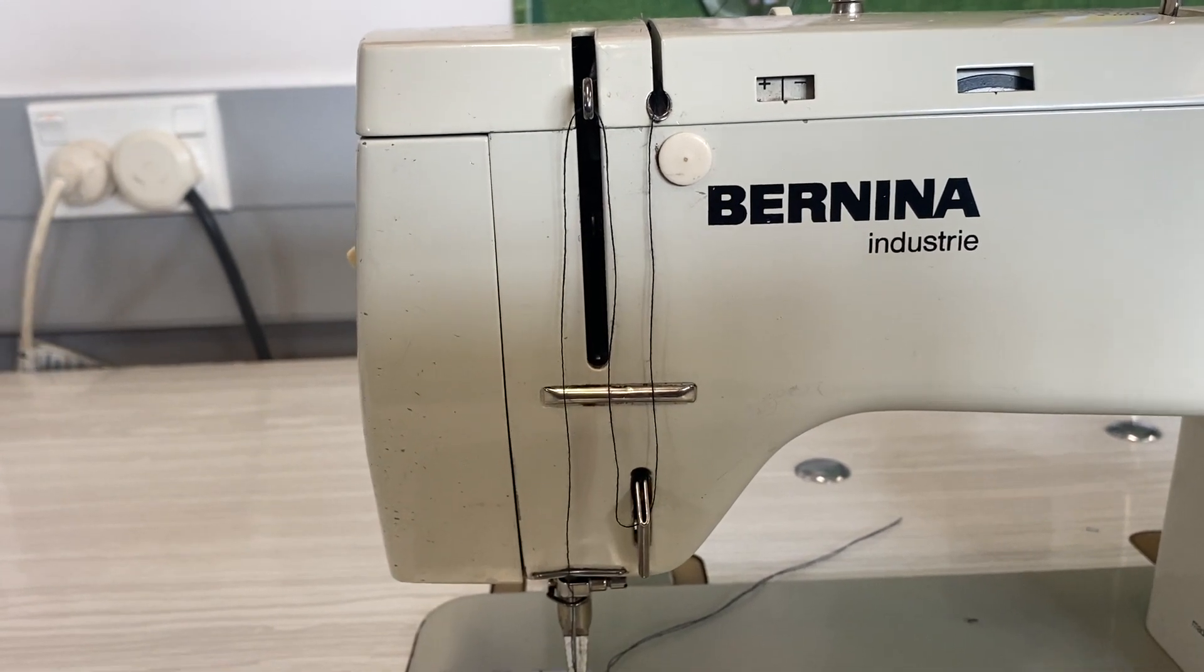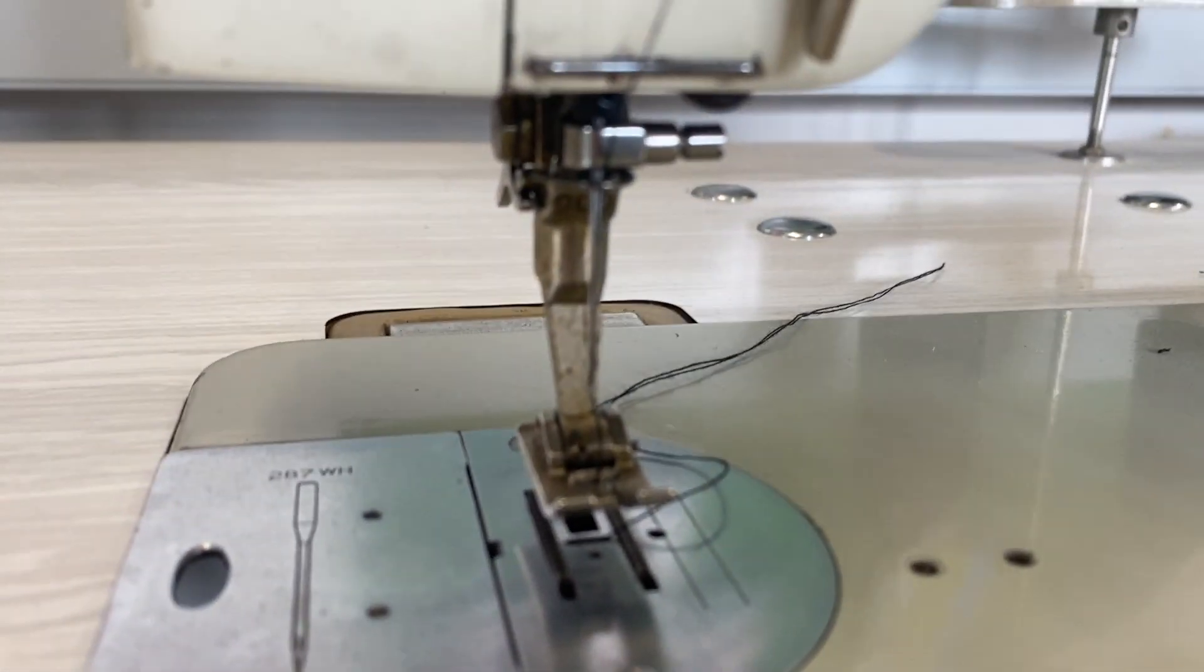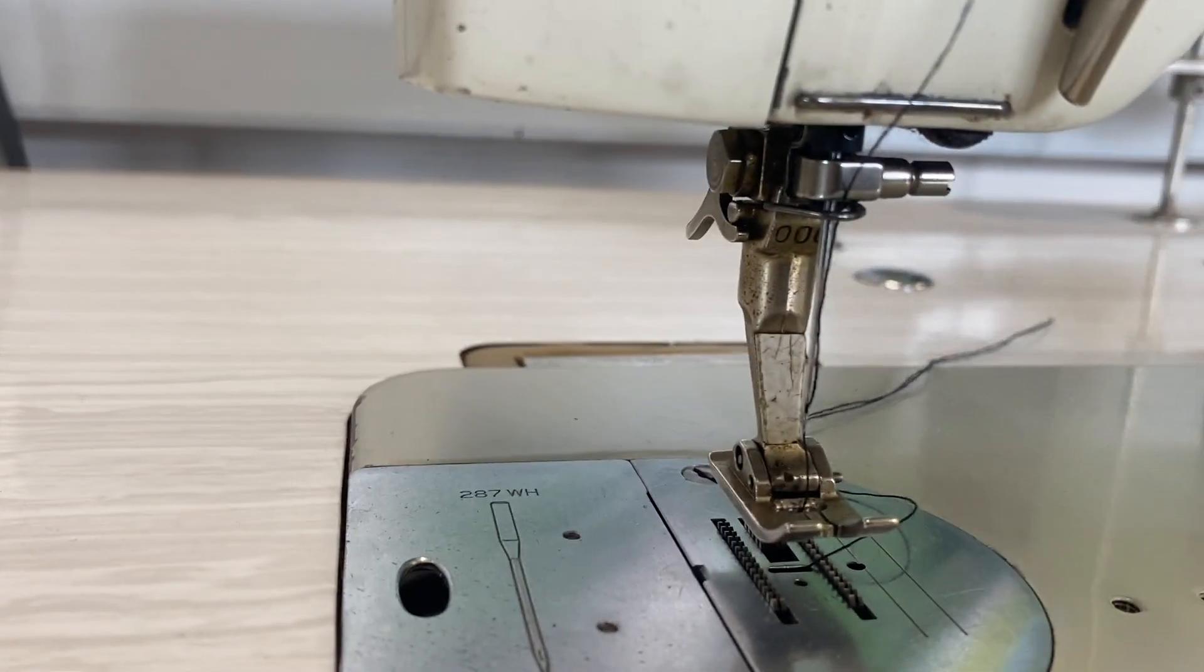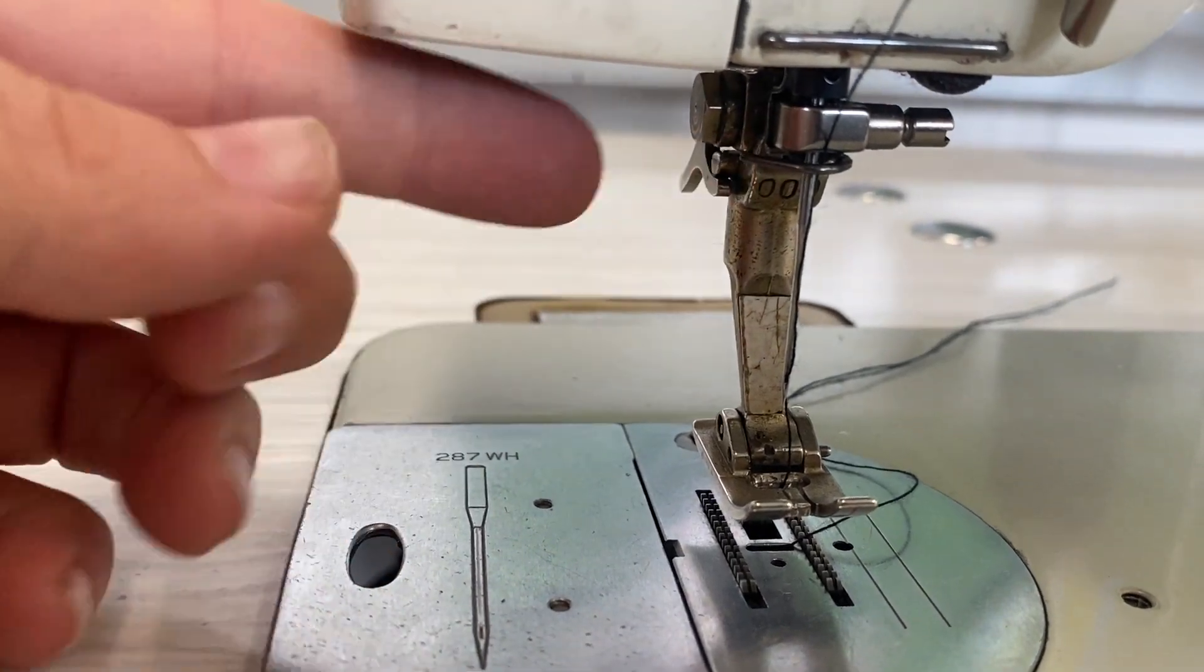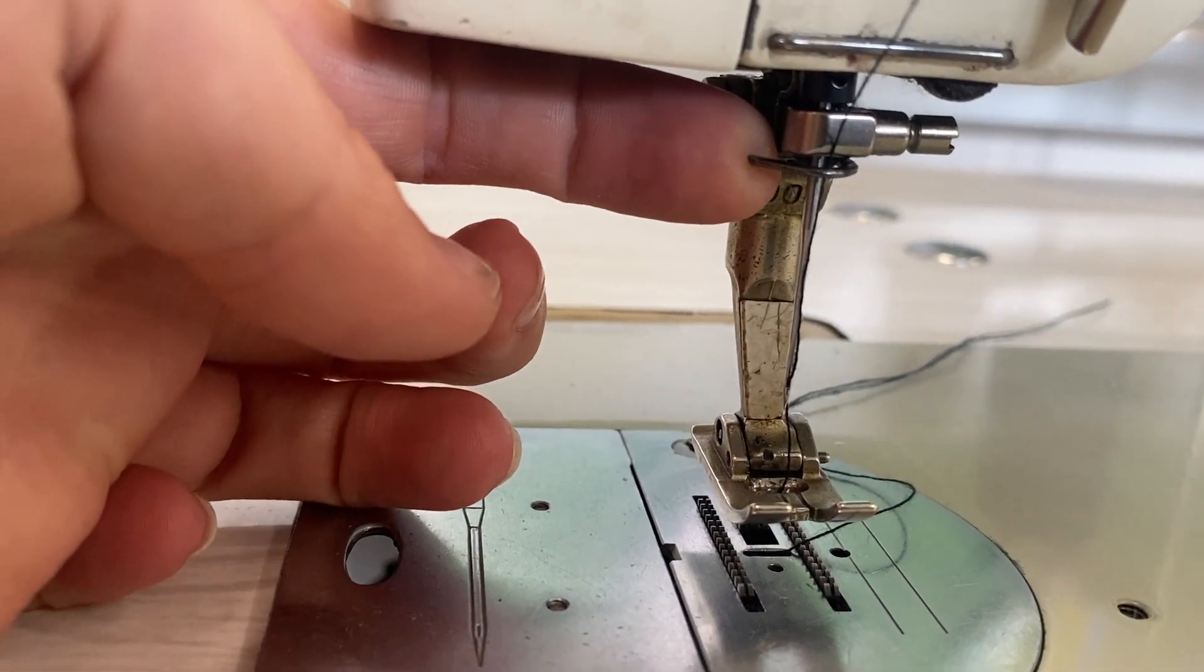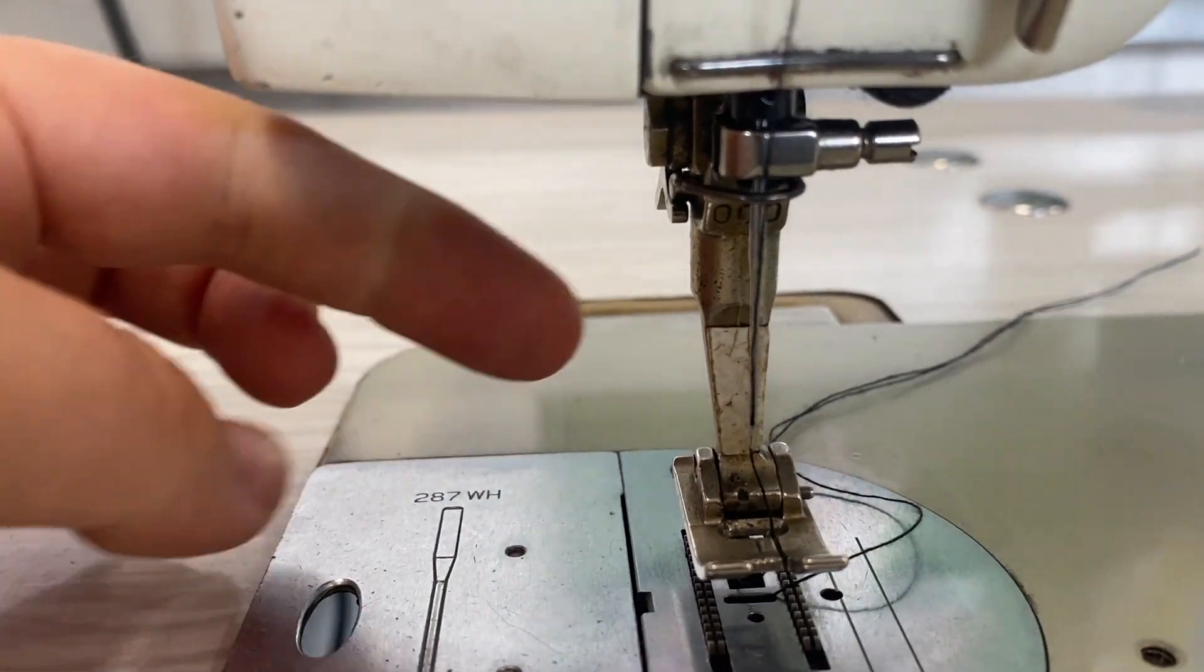It's similar to pretty much every machine. You've got your hook down underneath, then once you've gone through this hook here—that's the opening of the hook on that side—it goes through your needle front to back.